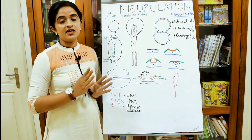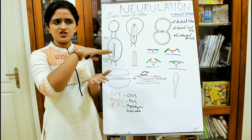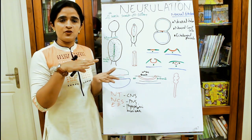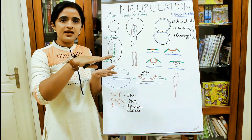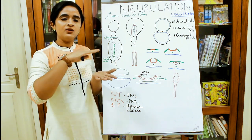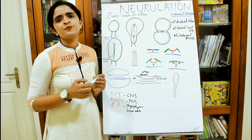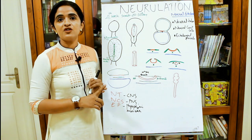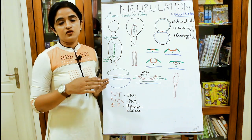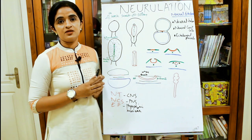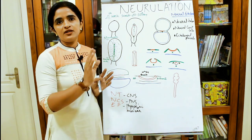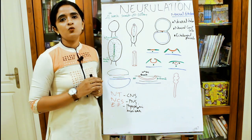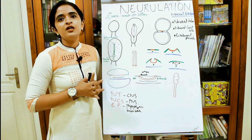By the end of the third week, we have a tri-laminar germ disc — imagine it as three discs stacked together: ectoderm on top, endoderm below, and mesoderm in between. The ectoderm has a protective function, the endoderm has a nutritive function, and the mesoderm gives rise to the skeletal system, muscle system, and blood and blood vessels. Now it's time for the nervous system to develop.